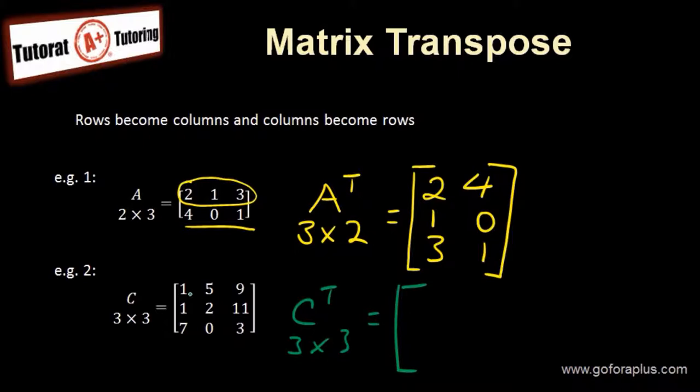The first row—one, five, nine—becomes the first column. So one, five, nine. The second row is one, two, eleven, which becomes the column one, two, eleven.